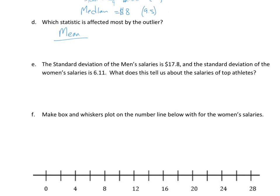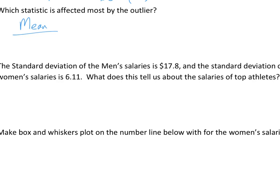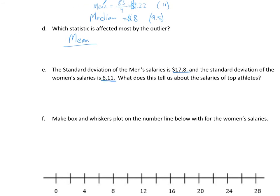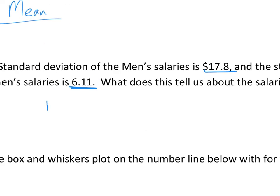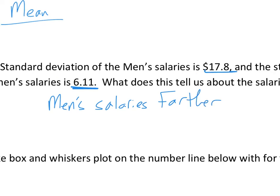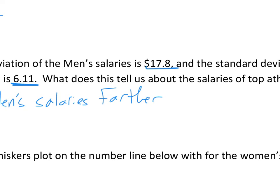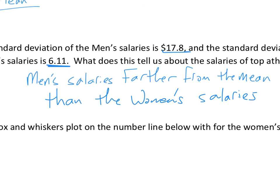The standard deviation for male athletes is 17.8 million and for female athletes is 6. This tells us the men's salaries are more spread out — less consistent, farther from the mean. The women's salaries are closer to their average than the men's; the men's are more all over the board.